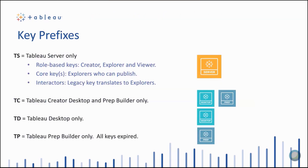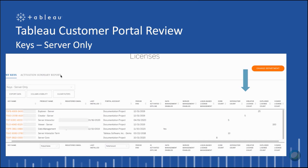Here's a quick review: Tableau server keys all start with TS — that's every type of product key, whether it's a role-based key, a core key, or the old interactor style keys. TC is only for desktop and prep. TD are old-style desktop keys. TP keys were around for a short time but have all expired and were activated on Tableau prep only. In the Tableau customer portal, you can select a filter to see only the keys for Tableau server.